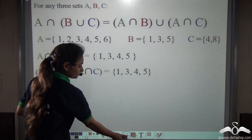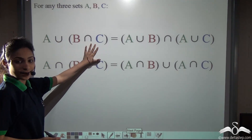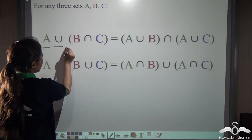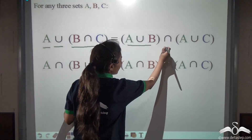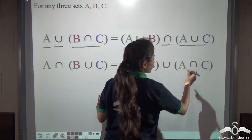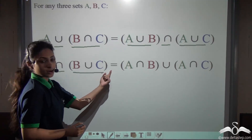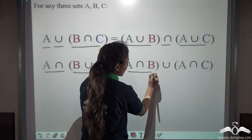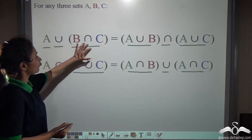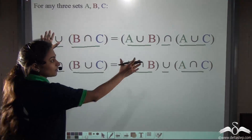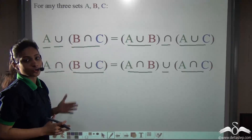So what did you learn? You learnt that for any three sets A, B and C: A union (B intersection C) gives you the same answer as (A union B) intersection (A union C), and A intersection (B union C) gives you the same answer as (A intersection B) union (A intersection C). Whenever you are given the information of one side, you can easily find that it equals the other side.